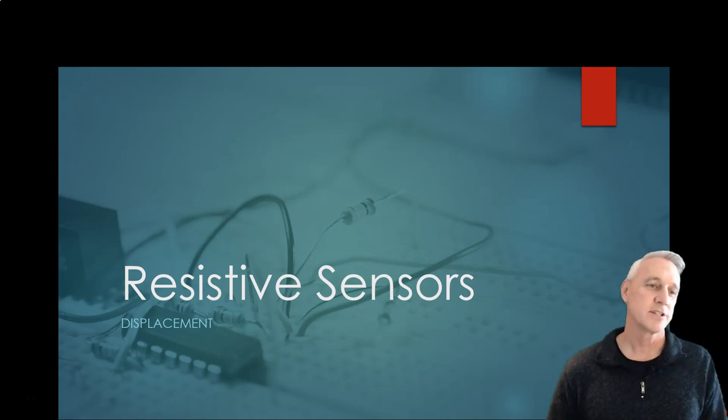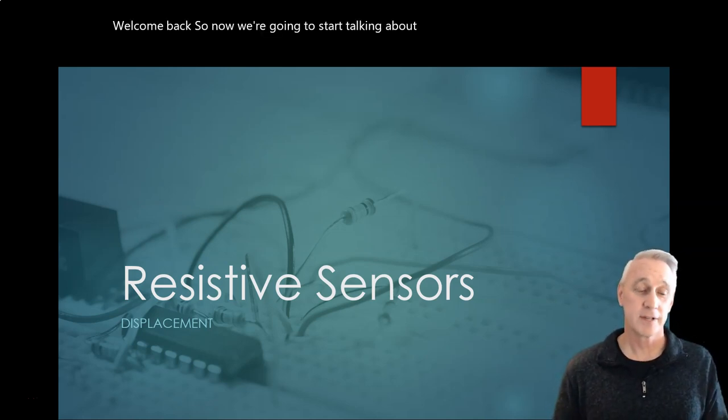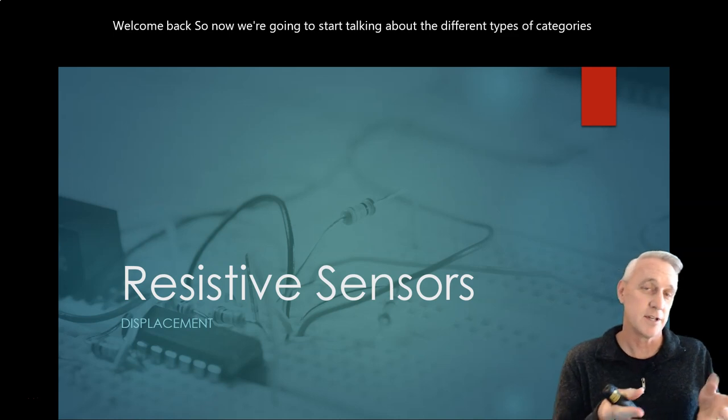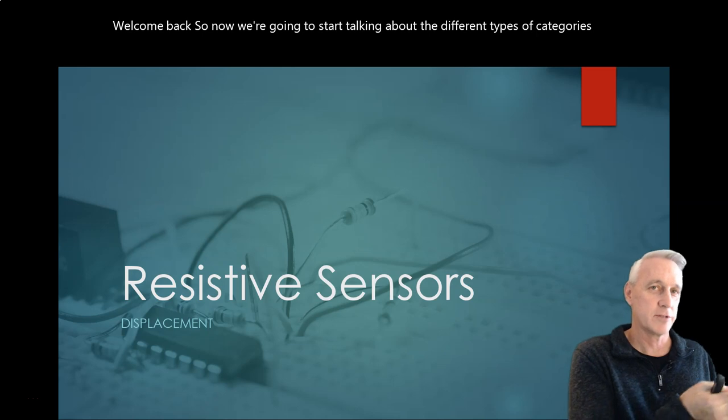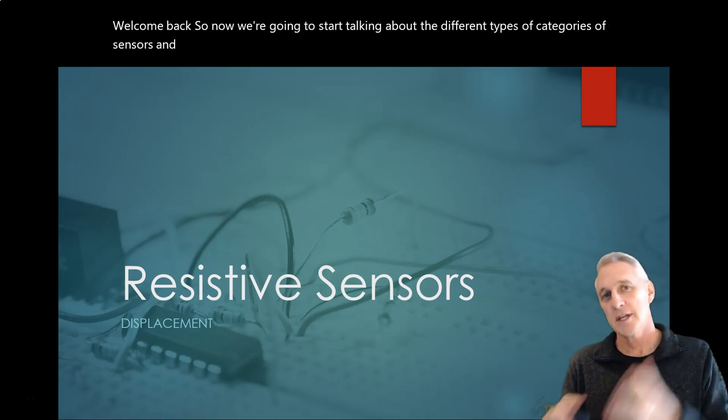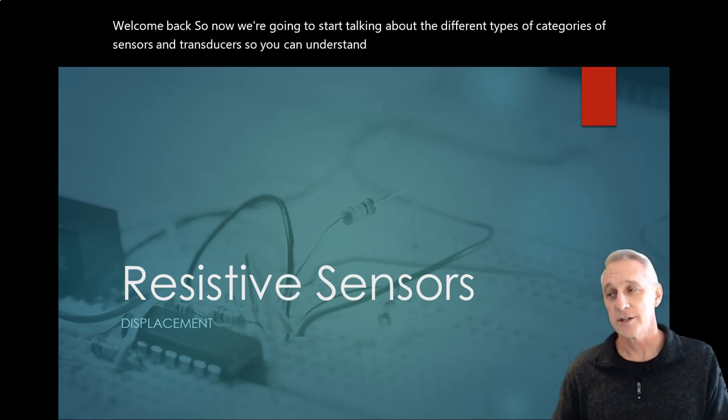Welcome back. So now we're going to start talking about the different types of categories of sensors and transducers so you can understand the different ways that we can go about transforming physical information into actually digital information.